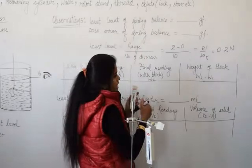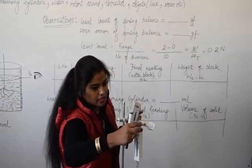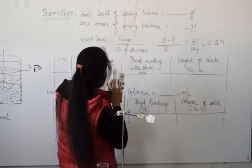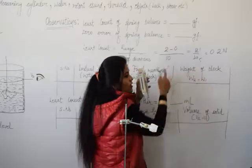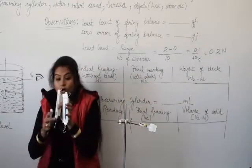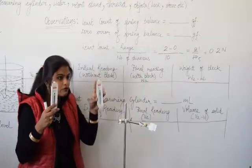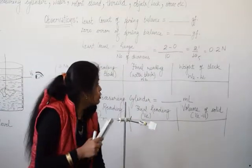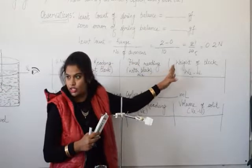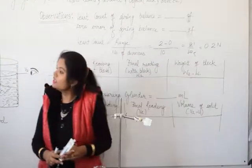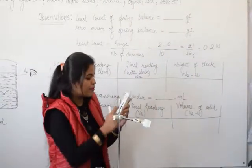Here I am having this spring balance. It is having zero to two. So two minus zero upon the number of divisions. Both spring balances have different least count. So two minus zero upon number of divisions. We calculate it here as 0.2 Newton. Or we can take it in gram also.